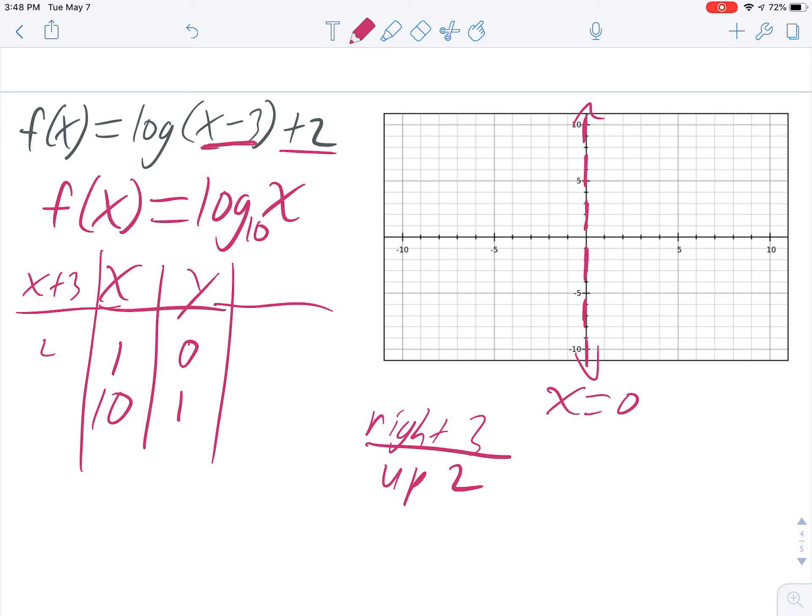So we've got 1 plus 3, which is 4, and then 10 plus 3, which is 13. It's going to go a little off my graph, but that's okay. And then up 2 means we're going to add 2 to the y values. So 0 plus 2 is 2, and 1 plus 2 is 3.